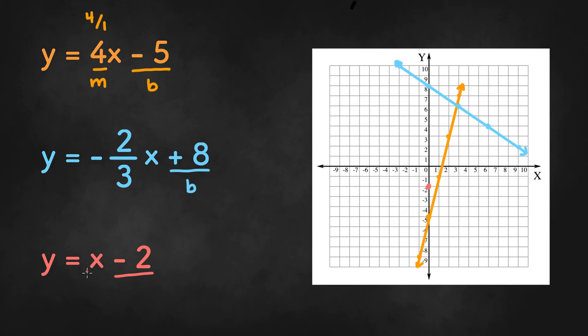And then we have a missing slope and when there's no number in front of the x we know that the slope is 1. So the slope is going to be 1 over 1.